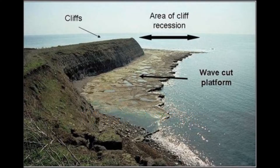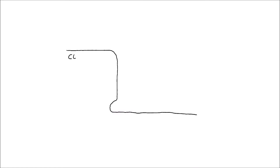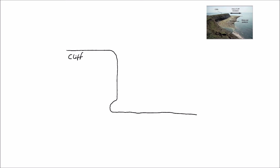It normally has rough rocks, tidal pools and seaweed and things like that. When you're drawing a wave-cut platform, you have to make sure that you're drawing it on a vertical cliff face, because most of the time this type of feature forms on a hard rock cliff face like chalk or limestone or something along those lines.